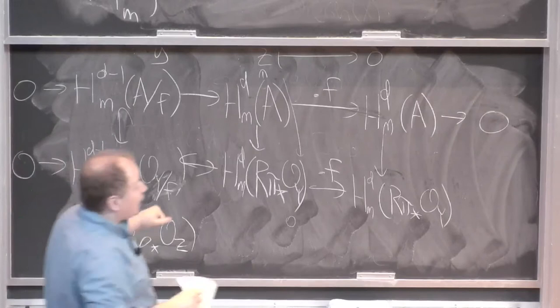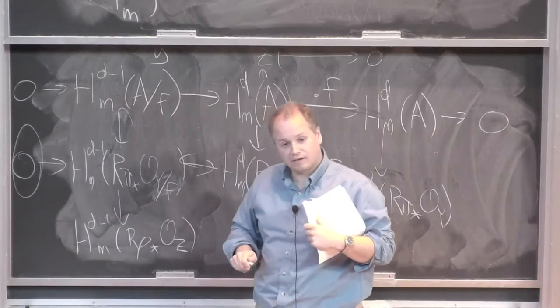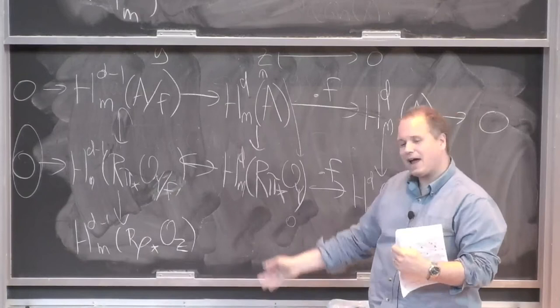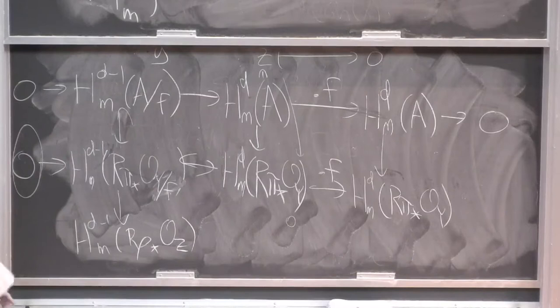So it wasn't very hard in characteristic zero. The only things we really used were this injectivity, the ability to compare resolutions of A and A mod F simultaneously, and crucially the Grauert-Riemenschneider vanishing right there.